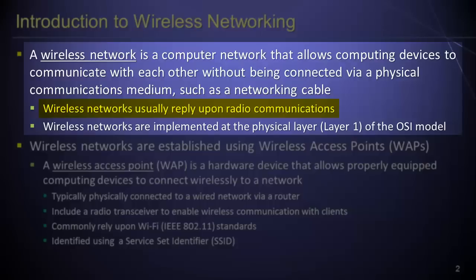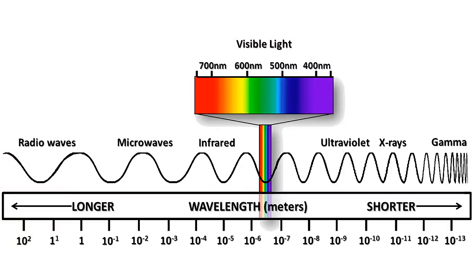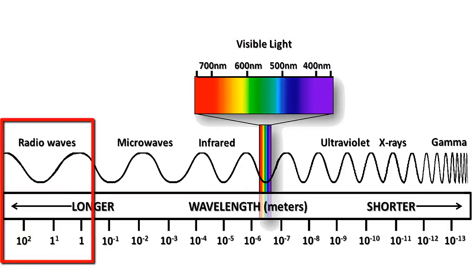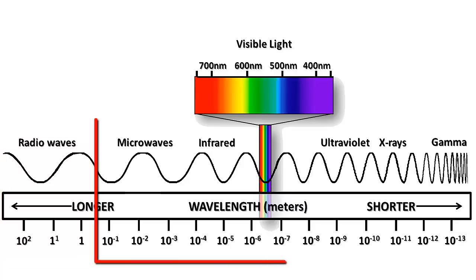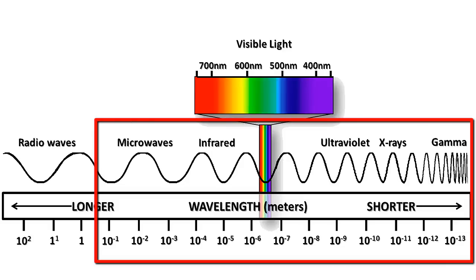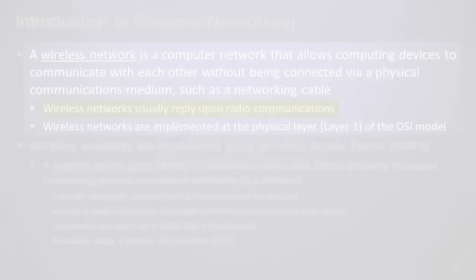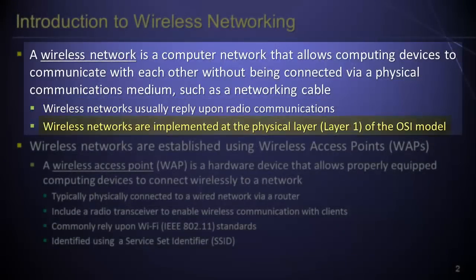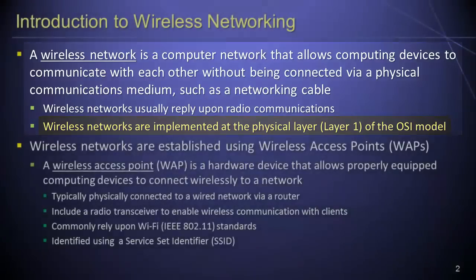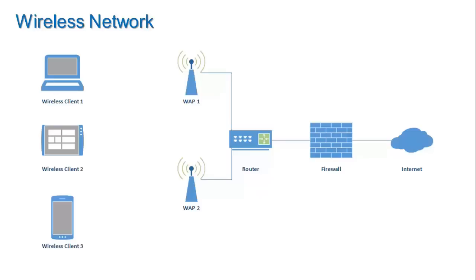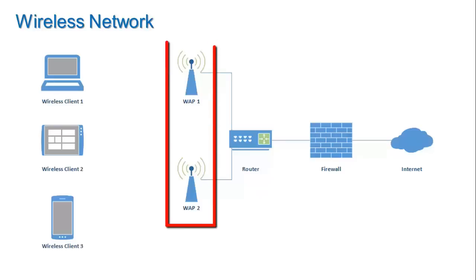Modern wireless networks typically rely upon radio communications, which take place in the band of frequencies beyond infrared light in the electromagnetic spectrum. Other means of wireless signaling, which rely upon higher energy frequencies within the electromagnetic spectrum, are also possible. Within the broader framework of network communications, wireless networks are implemented at the physical layer — that is, layer 1 — of the OSI reference model. Wireless networks are established using wireless access points, or WAPs.